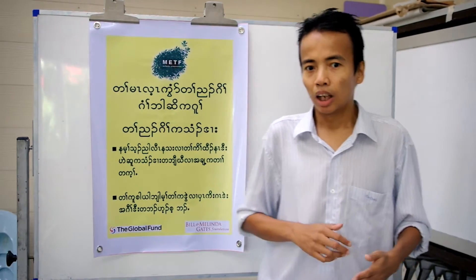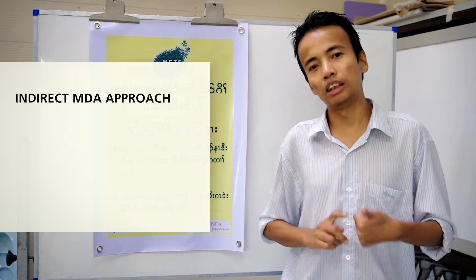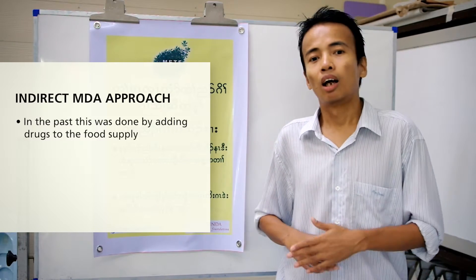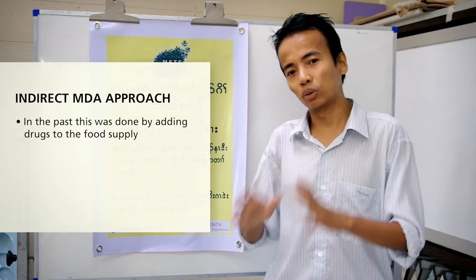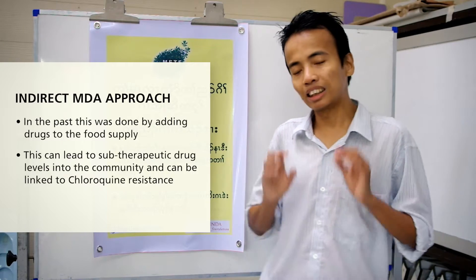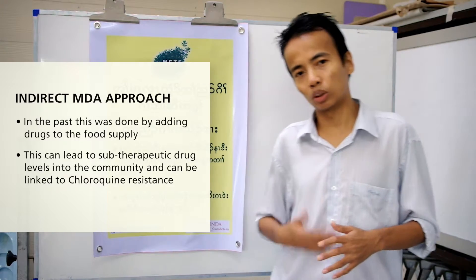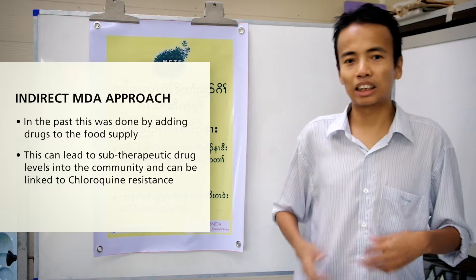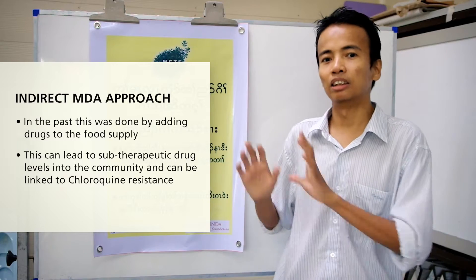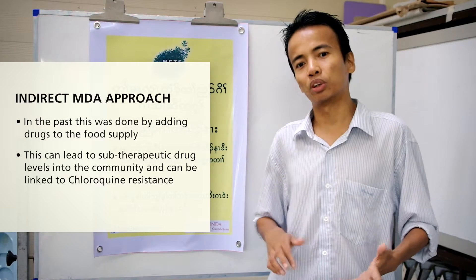In providing mass drug administration, there will be two approaches. One approach is the indirect MDA or indirect mass drug administration, used in the past by adding the anti-malaria drug into food staples, especially salt. But this approach can lead to the introduction of sub-therapeutic drug levels into the community for a long period of time, and it can be linked to the emergence of chloroquine resistance in the case of chloroquine distribution historically.